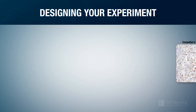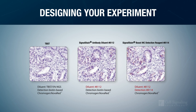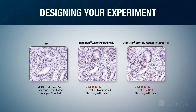Originally, we tested PLK1-Rabitmab with VectorNovaRed as our chromogen, which produces a bright red precipitate. However, as NovaRed did not provide a sufficient signal, we switched to the more intense dark brown DAB.